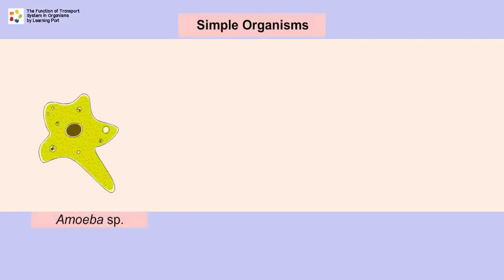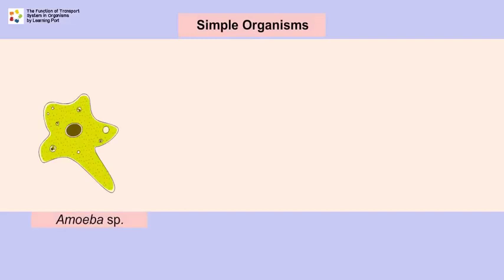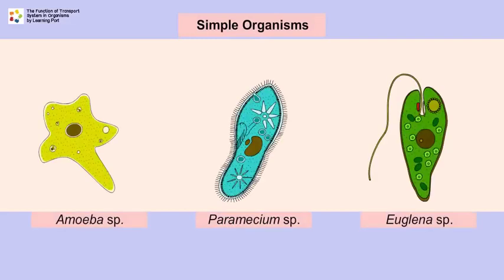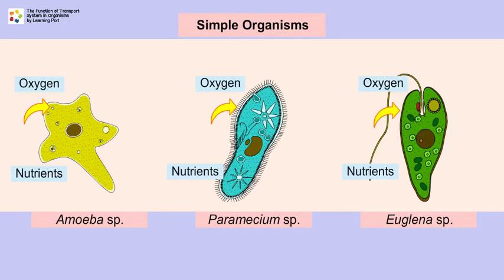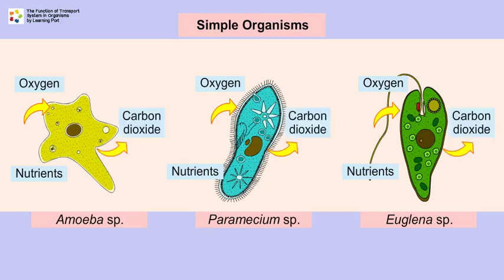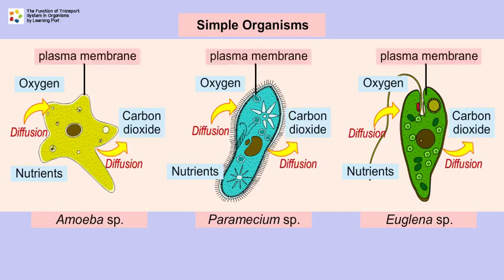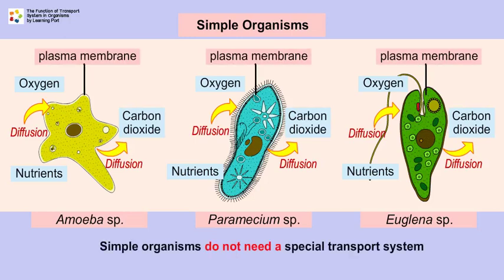Simple organisms such as amoeba species, paramecium species, and euglena species are able to obtain oxygen and nutrients directly from the external environment and eliminate carbon dioxide and other waste products by diffusion through the plasma membrane. Therefore, simple organisms do not need a special transport system.